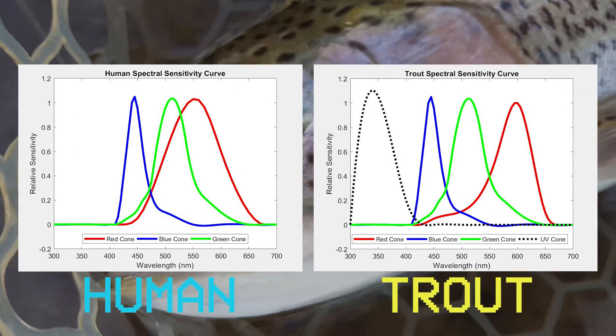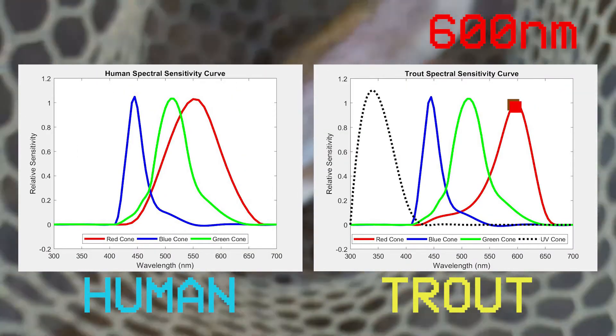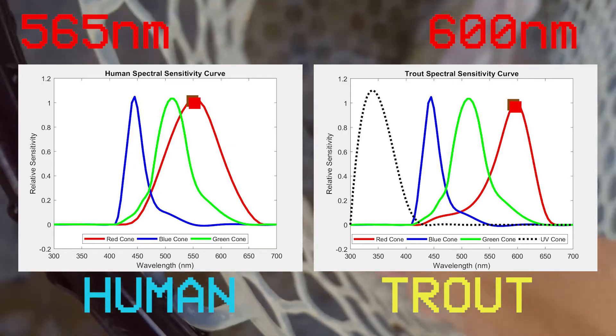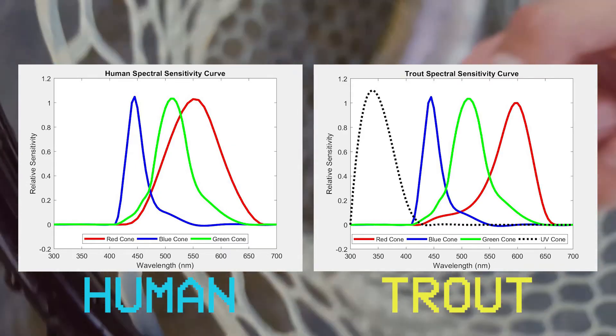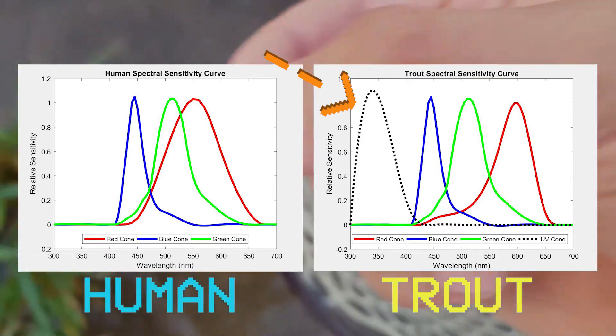This difference illustrates the idea that trout don't have the same color sensitivity as humans do when using this red cone to perceive color, and that they also have a UV cone, differing from humans as well.